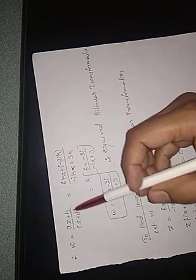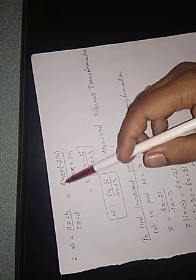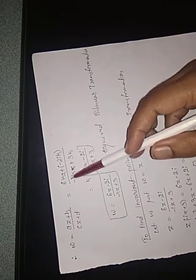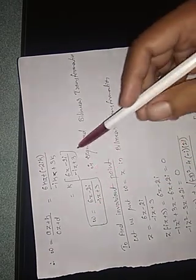Now substituting b, c, d back into equation 3 to find a: a equals b minus 2c plus 2d, which after substituting gives a equals 6k. Using all these values of a, b, c, d in the bilinear transformation: omega equals 6kz plus minus 2ik, divided by minus ik times z plus 3k. Taking k common, k cancels, giving omega equal to 6z minus 2i, divided by minus iz plus 3, which is the required bilinear transformation.